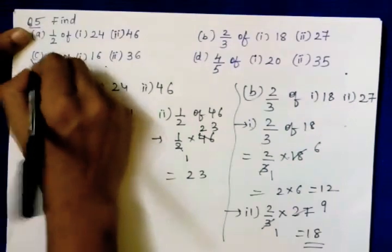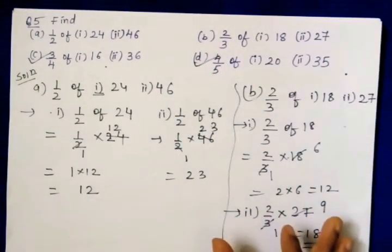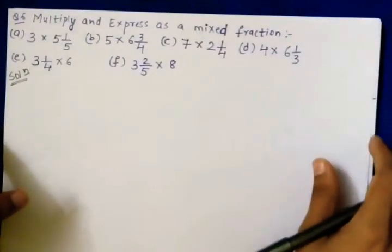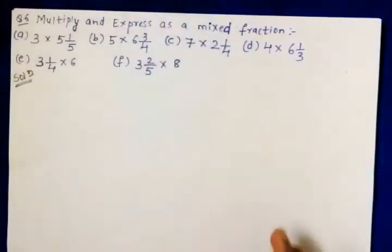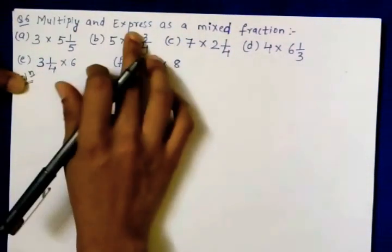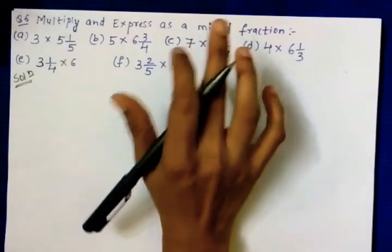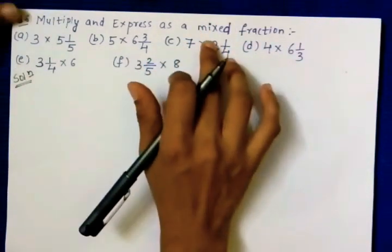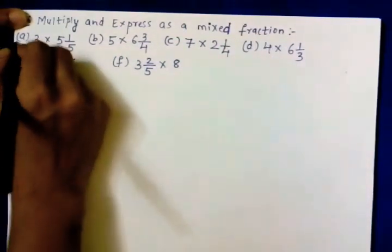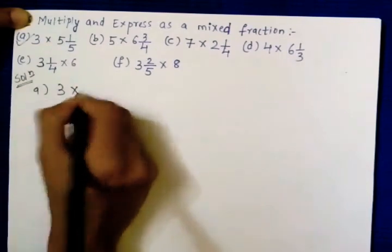Parts c and d you will try yourself. That was question number 5. Now question number 6: multiply and express as a mixed fraction. If cancellation is possible, do it first, then convert to mixed fraction.